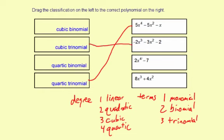The next one, the degree is 4, so it's quartic again. There are two terms, which makes it a binomial. It's a quartic binomial.